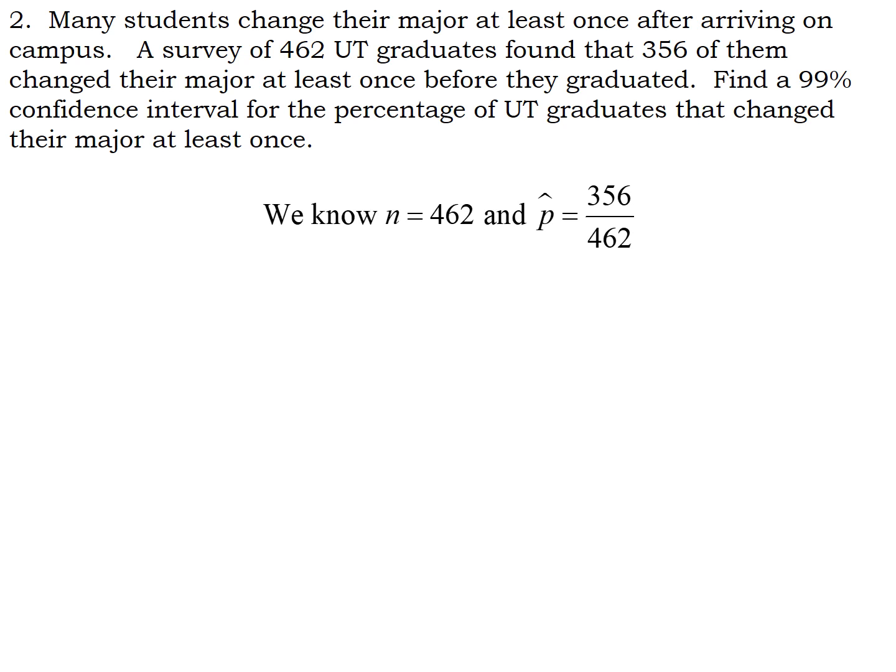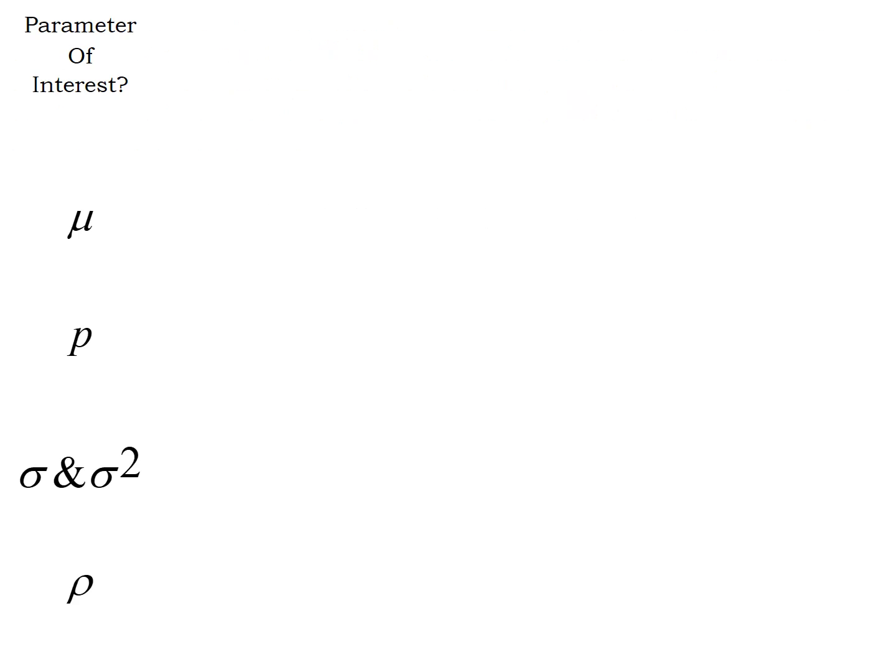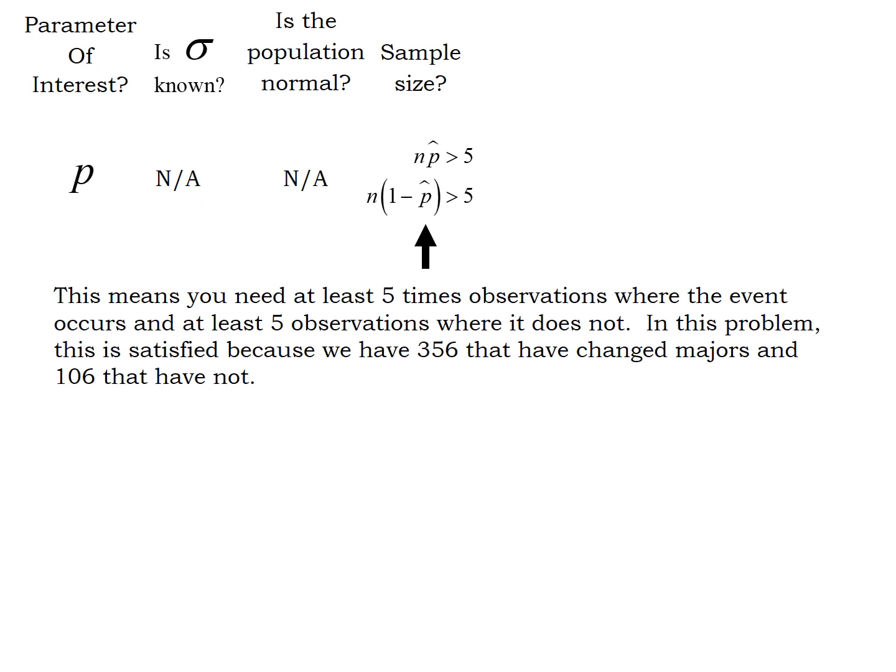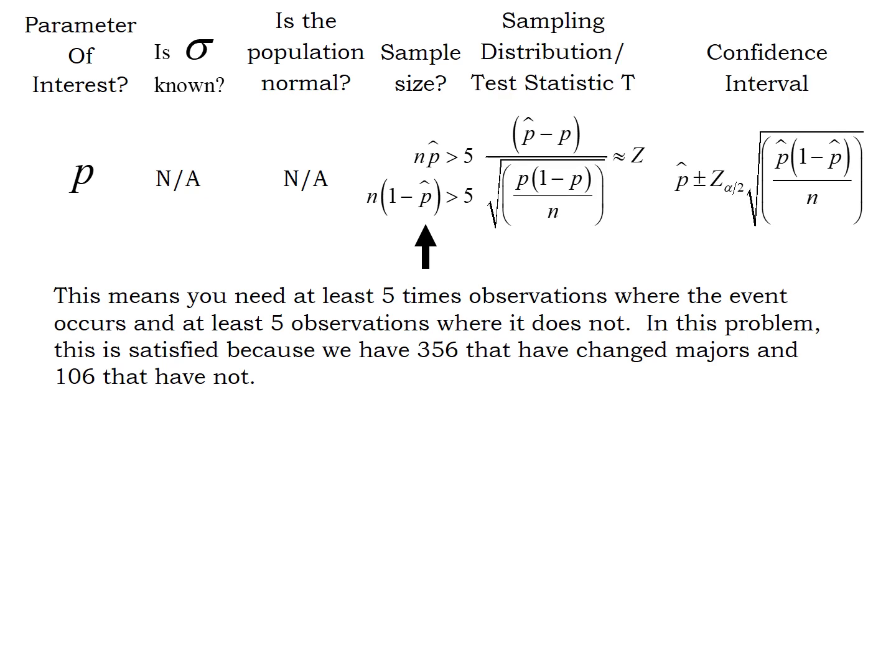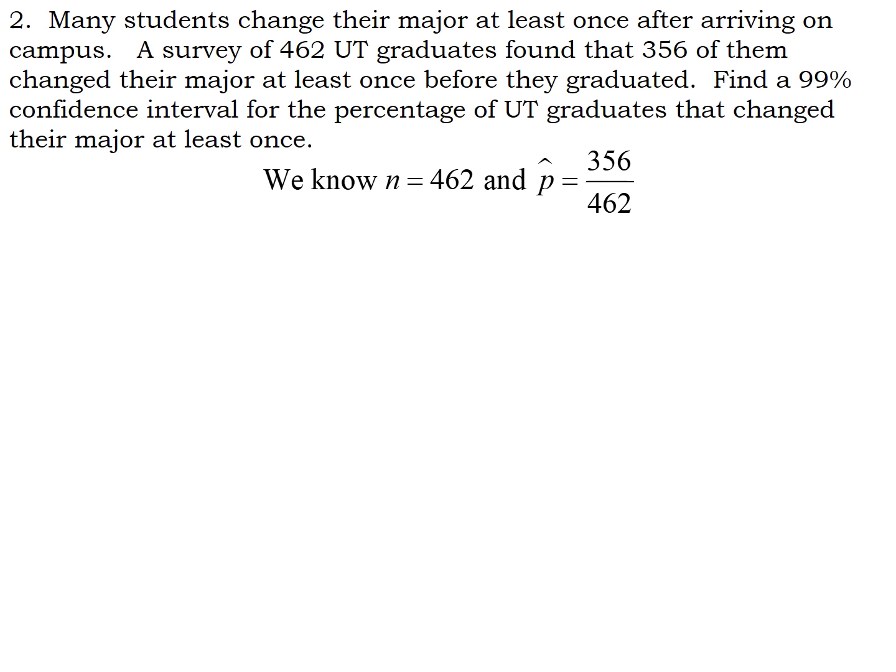Now notice here, we're doing a confidence interval for the percentage. So choosing our formula, the parameter of interest, percentage is proportion multiplied by 100. So the parameter of interest is proportion P. And whether or not we know sigma or whether or not the population is normally distributed does not apply here. We need our sample size requirement, at least five in and five out of our category. In this particular case, we had way more than five people who changed their major at least once and more than five that had not changed their major. So we met this condition, which means we can use this sampling distribution and this confidence interval formula over here.